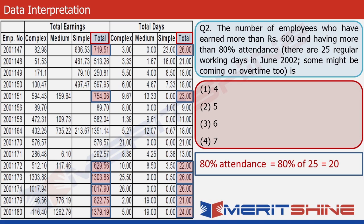So we are left with these employees. Counting them quickly: 1, 2, 3, 4, 5, 6, 7. So the answer is option 4, which is 7.